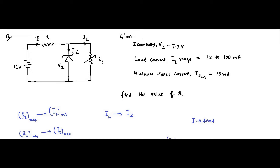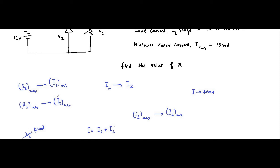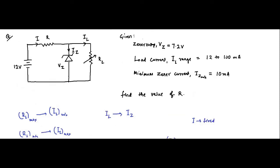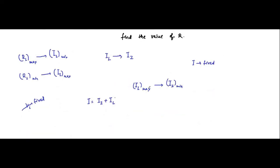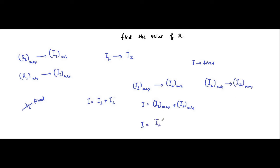Since I is fixed, the only thing changing is the load resistance value. This load resistance variation causes the load current to change between two extreme values. When the load current is maximum, the Zener current will be minimum: I = IL_max + IZ_min. When the load current is minimum, the Zener current will be maximum: I = IL_min + IZ_max. The load current and Zener current will never be maximum or minimum at the same time — they are always opposite.